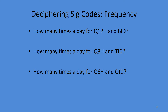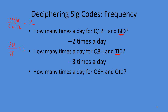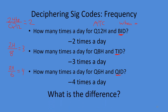Let's explore the differences further. Q12h: 24 hours divided by 12 gives two doses per day — same as BID. Q8h: every eight hours gives three doses per day — same as TID. Q6h: 24 divided by 6 gives four doses per day — same as QID. However, q6h is around-the-clock dosing while QID is when-awake dosing.